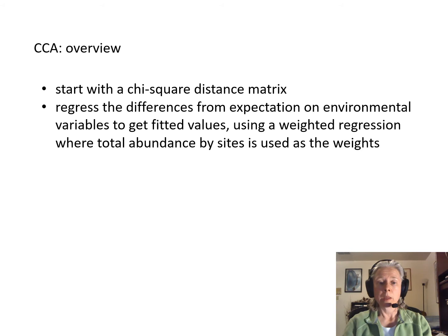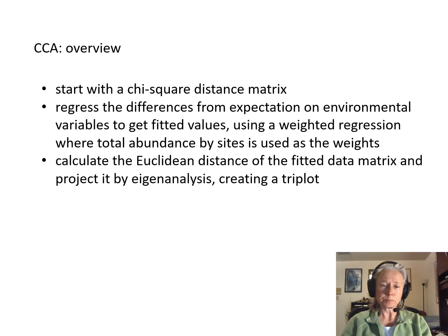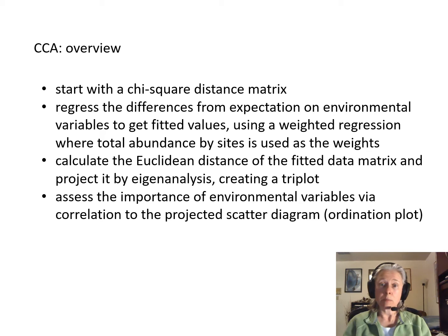In CCA you start with a chi-square distance matrix, and then you regress the differences from expectations on environmental variables in order to get your fitted values, then use a weighted regression where the total abundance of species by sites is used as the weights. You then calculate the Euclidean distance of the fitted data matrix and project it by eigenanalysis, creating a triplot where you've got your three forms of data — your sites, your species, and environmental variables — all plotted simultaneously. You then assess the importance of the environmental variables by correlation to the ordination plot or triplot.